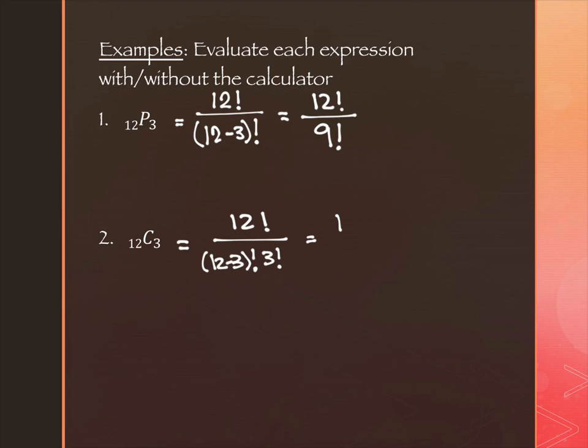So on this one, I have my 12 factorial on top. I have my 9 factorial on bottom. But I have a 3 factorial as well. The 9 people who don't get to go, it doesn't matter how I would have picked them. But the 3 people who get to go, it doesn't matter how I picked them either. They still get to go.